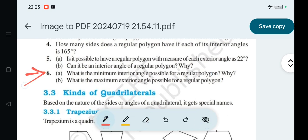Question number 6 is: What is the minimum interior angle possible for a regular polygon? Why? For a regular polygon, what is the minimum interior angle? First of all, for a regular polygon, the interior angle formula...